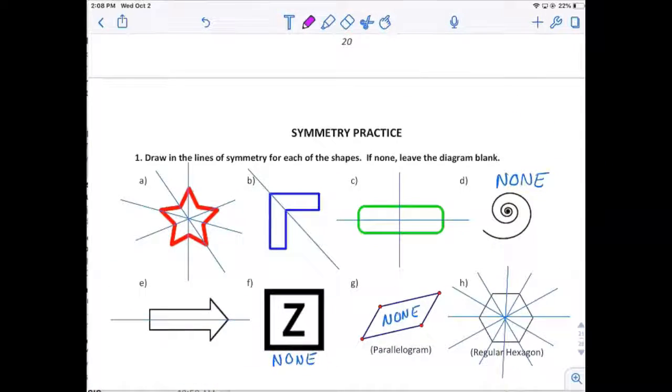Here are my lines of symmetry for this section. There are five lines of symmetry on the red star. There's a diagonal line through that blue L-shaped thing. There's two lines of symmetry through the rounded off green rectangle. That hurricane symbol, D,